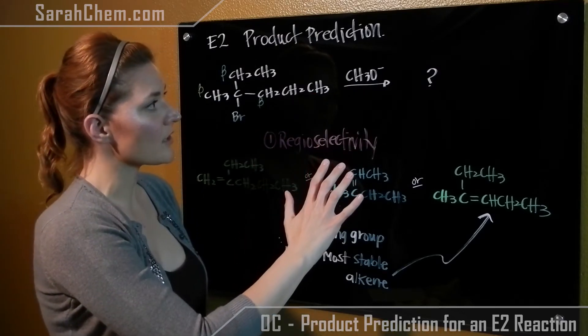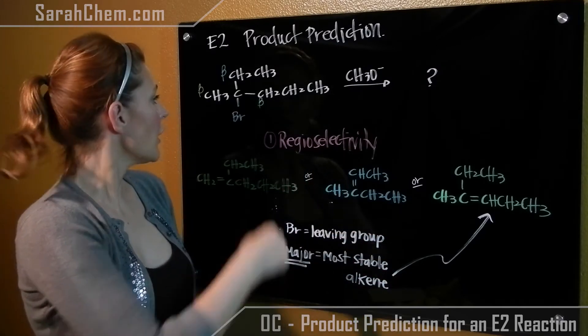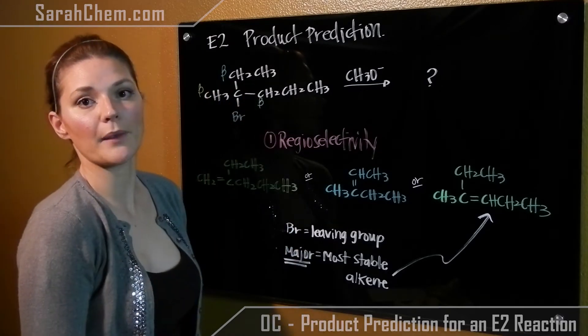So once we've established that this is in fact an E2, we'll then look at our beta carbons. So this alpha carbon here has three adjacent carbons, so those three are all our betas.